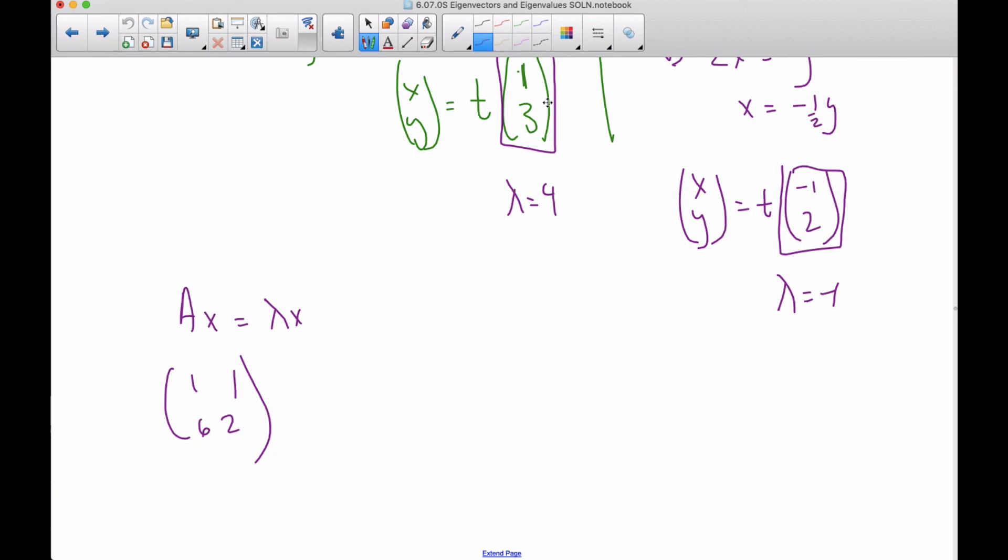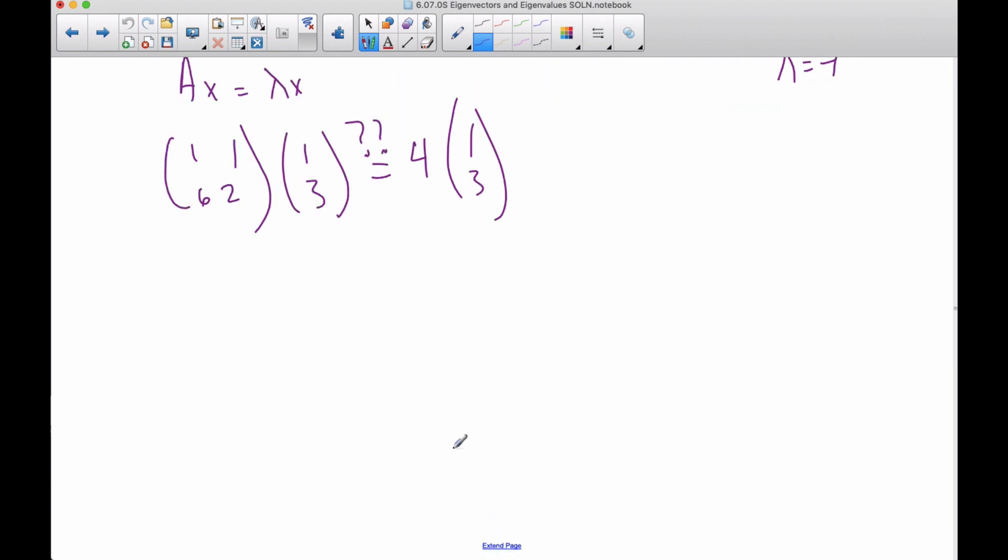X, let's choose this one for no good reason, other than it was the first one we did. And I want to test to see if this is a true statement that the lambda times four times one, three. And so now when I multiply one times one plus one times three, that's four. This is six plus six is twelve. When I go to this side, I get four and I get twelve. And they are indeed equal.